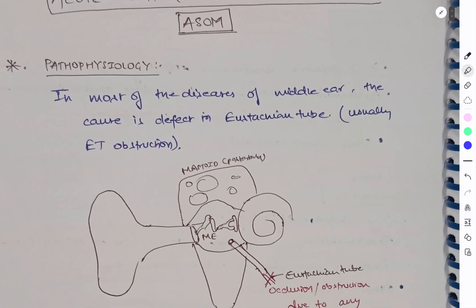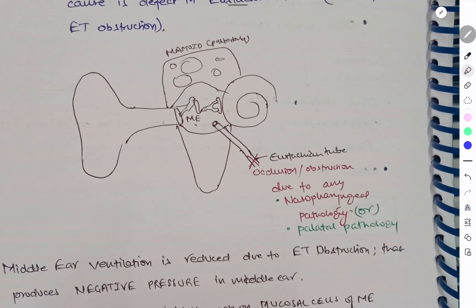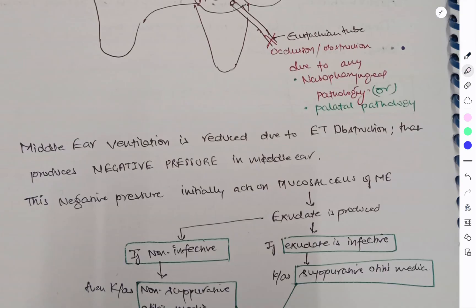Coming to the pathophysiology of it, most of the diseases of middle ear, the cause is depicted by Eustachian tube, mainly ET obstruction. Eustachian tube obstruction or occlusion can be due to any cause - nasopharyngeal cause, nasal cause, or palatal cause. So here you need to draw this diagram and put an obstruction over the Eustachian tube to represent in the exam. Here middle ear ventilation is reduced due to the ET tube obstruction that produces negative pressure in the middle ear. And due to this negative pressure, initially the mucosal cells of middle ear activate and produce exudates. If this exudate is infective, it is called suppurative otitis media.